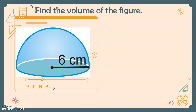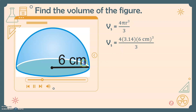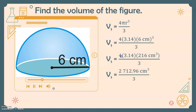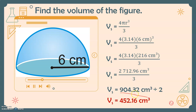Another example: this time we are given a hemisphere, which means half of a sphere. To compute its volume, we first find the volume of the entire sphere using the formula. Substituting the given radius of six centimeters, we have four times 3.14 times six centimeters cubed divided by three. Six centimeters cubed is 216 cubic centimeters, giving a full sphere volume of 904.32 cubic centimeters. Since we only have a hemisphere, we divide that volume by two, giving us 452.16 cubic centimeters.